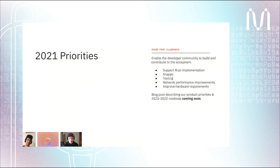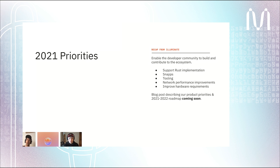Looking forward to 2021 priorities — the same things discussed at Illuminate. O(1) Labs wants to enable the developer community to build and contribute to the ecosystem. We're helping to support the Rust implementation that ChainSafe is working on, working on snaps and various tooling associated with snaps and with MENA, and putting a lot of effort into improving performance and fixing issues with the daemon to reduce hardware requirements for running nodes. There's going to be a blog post describing our priorities and the 2021 and 2022 roadmap coming really soon.